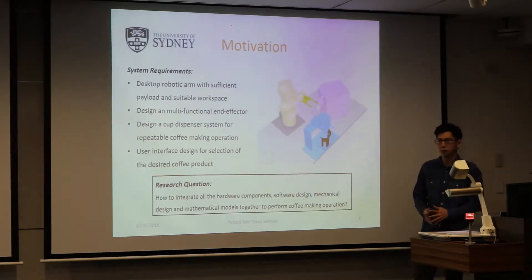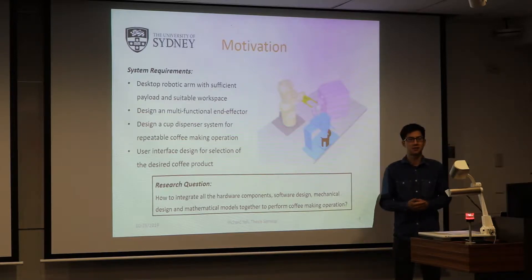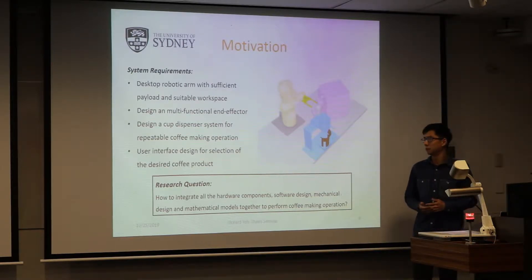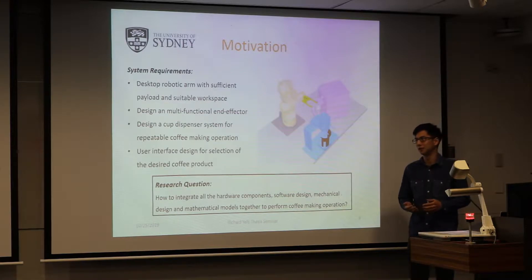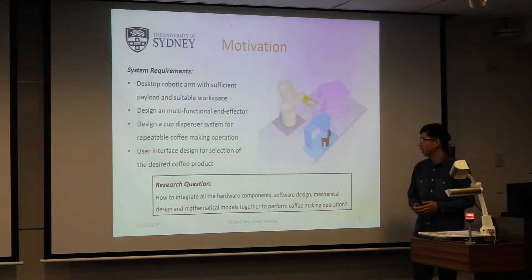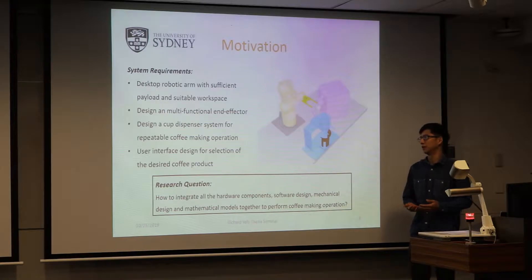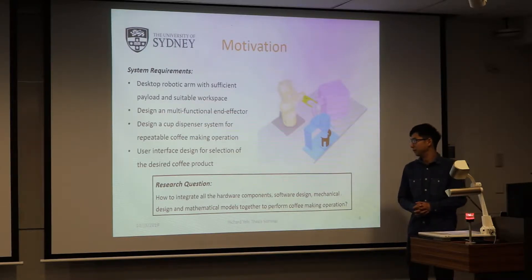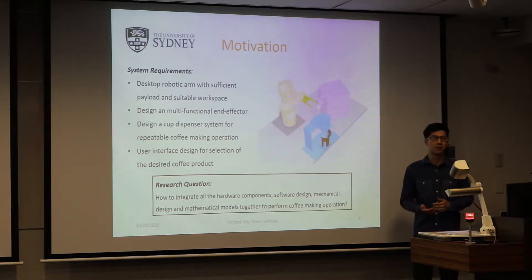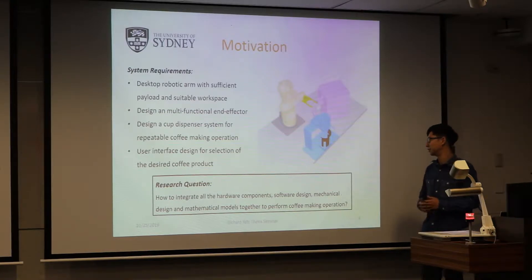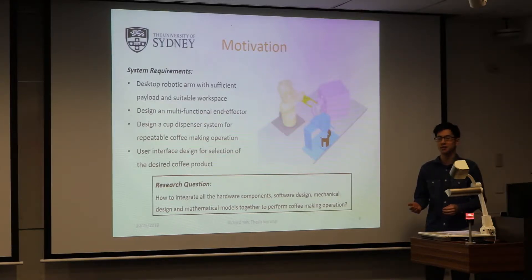The goal is to develop a small system to study the kinematics of a robotic desktop automation system. Such a system requires a desktop robotic arm with sufficient payload to lift a coffee cup weighing around 500 grams. It also needs a multi-functional end-effector able to press buttons on a coffee machine and lift cups. A cup dispense system must be designed for repeatable coffee-making operations, and a user interface allows users to select different products. This leads to the research question of how to integrate all hardware components, software components, mechanical design, and mathematical models to perform the coffee-making operation.